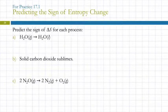Predict the sign of delta S for each of these processes. Water in the gas state going to water in the liquid state. Negative, because it's becoming more ordered. There are fewer microstates.